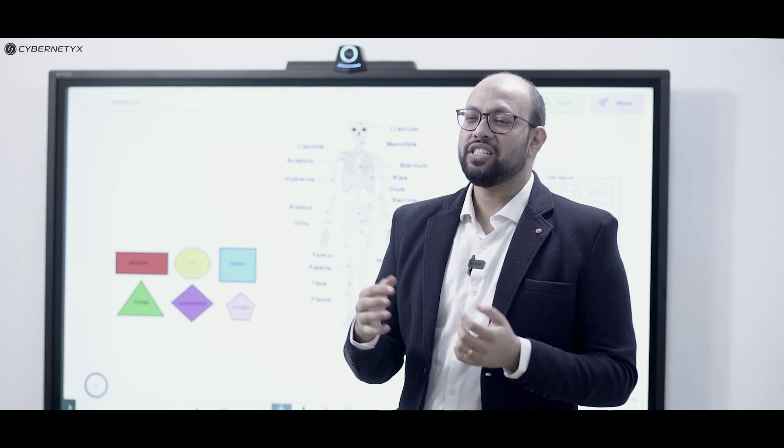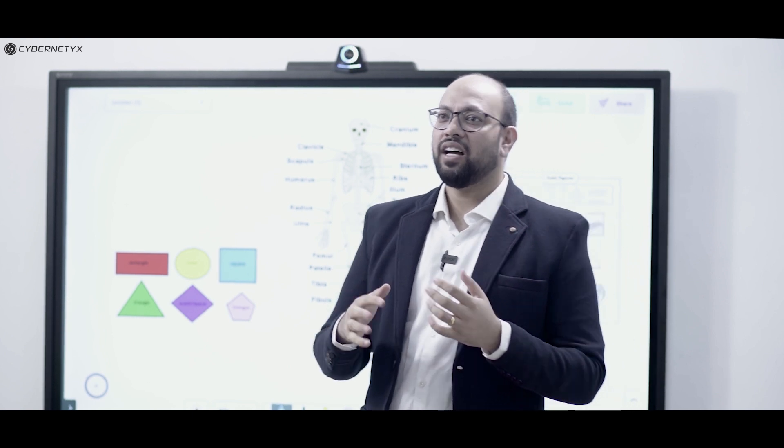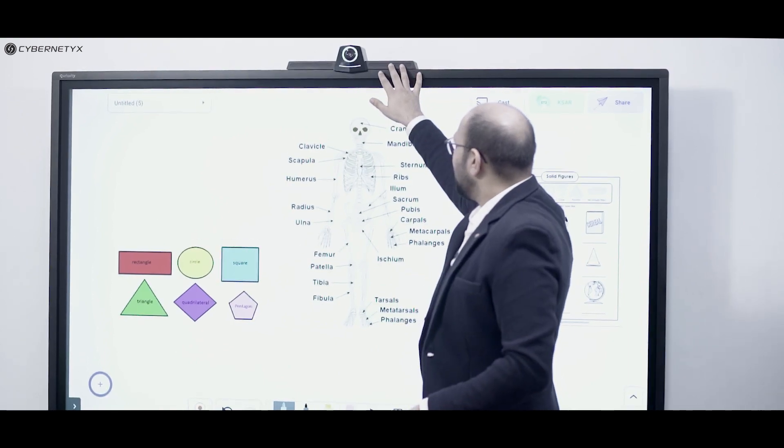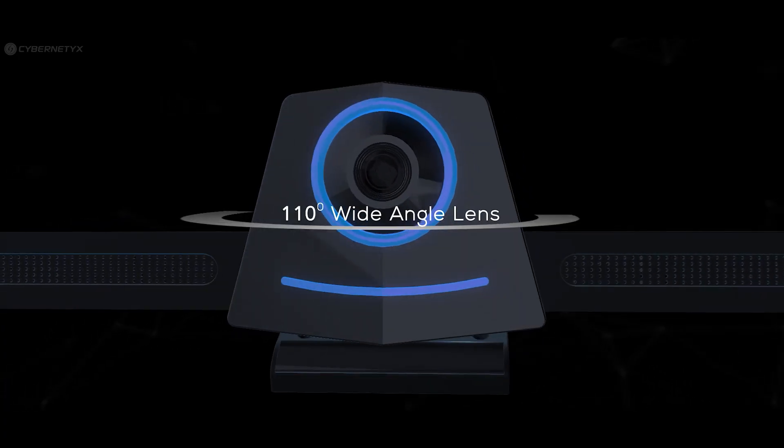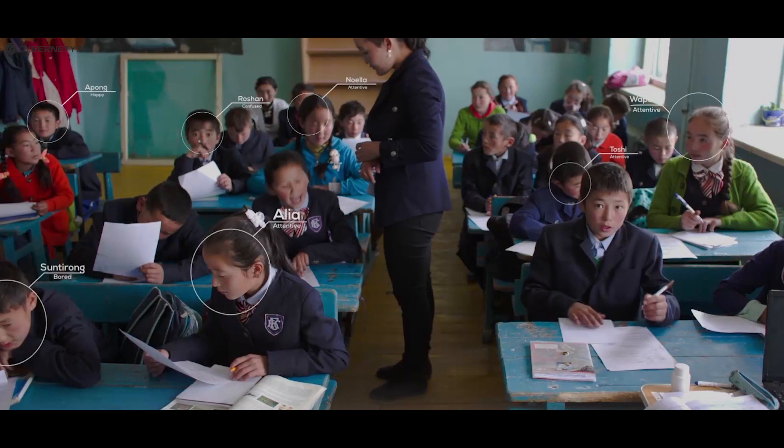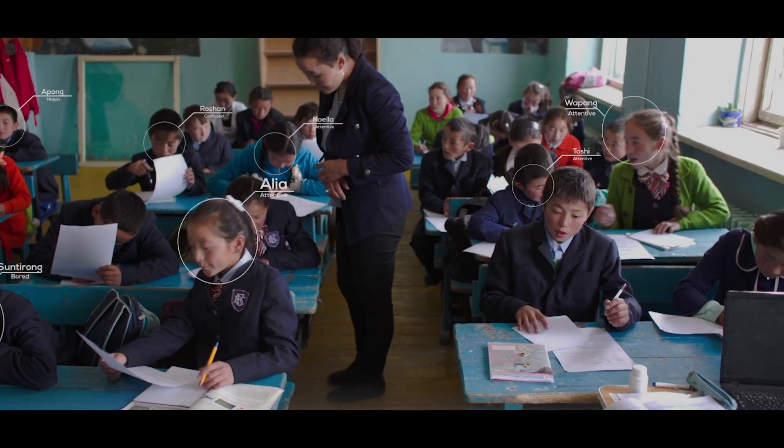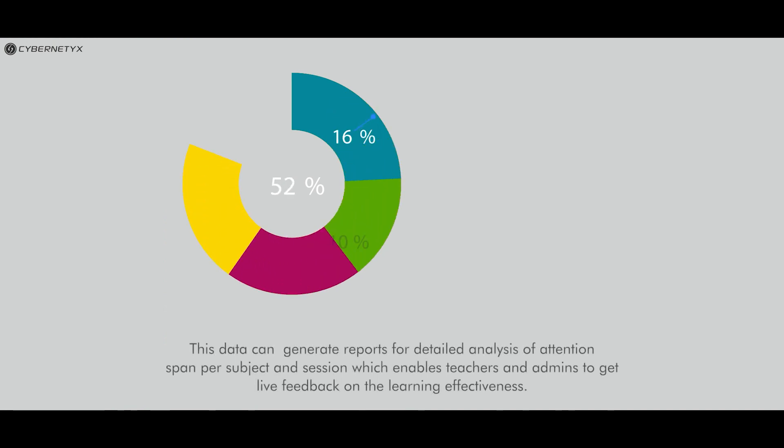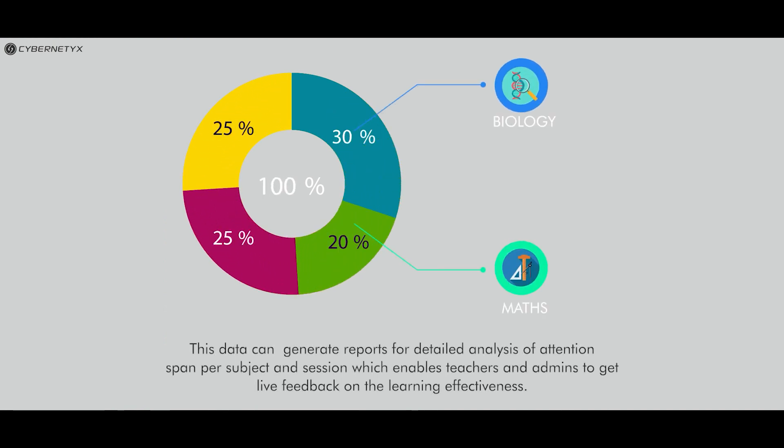The main distinguishing feature that makes Curiosity stand against other interactive panels in the industry is this Class EQ camera. It has an ultra wide lens that can cover students sitting in any part of the classroom. This Class EQ camera captures the emotions and attentiveness of students and generates a classroom behavior analytics report. This report can be used by teachers and admins to retrospect and find out what kind of content helps with student engagement levels.